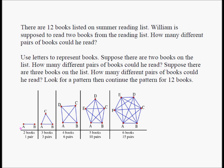Let's see what's going on here. If he had two books, A and B, he would have one pair. If he had three books, A, B, and C, he would have three pairs: A-B, B-C, A-C. If he had four books, he would have six pairs. If he had five books, he would have ten pairs. If he had six books, he would have 15 pairs.